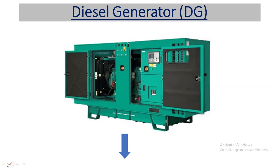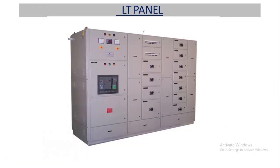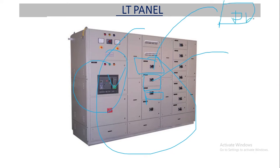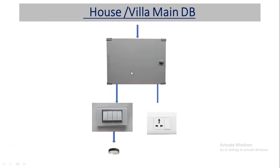From the transformer output it feeds to the LT panel. This is the DG panel; from both the transformer output and the DG, power feeds to the ATS panel. Here in the ATS panel we have two incoming supplies — from the transformer and from the DG — and one output. This is also a manual changeover switch for when power goes off. This is the LT panel with MCCBs; from each MCCB it feeds to each phase SMDB. This is the phase SMDB from which power distributes to each villa main DB, and then to the light circuit and power circuit of each villa.